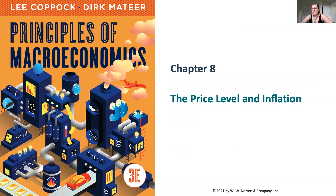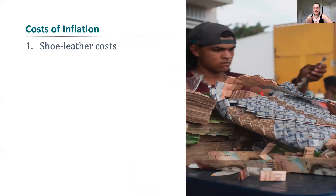All right, everyone. Professor Sackett-Taylor here, picking up with the video lecture, second half, on Chapter 8, Price Level and Inflation from Principles of Macroeconomics. In the last video lecture, we defined inflation and the CPI, the Consumer Price Index, and talked about their relationship to one another. Now, we're going to talk about the cost to society as the result of inflation, and then we'll break these down over the next couple slides.